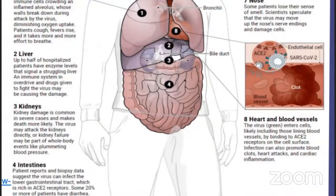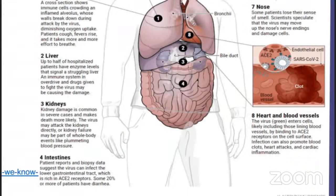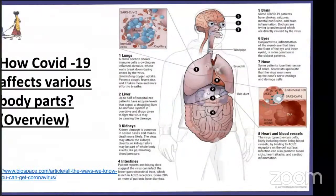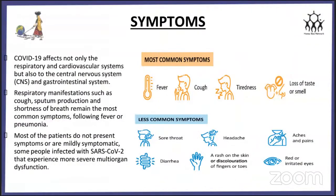Heart and blood vessels: the virus enters the cell — including those lining blood vessels — by binding to the ACE2 receptor on the cell surface. Infection can also promote blood clots, heart attacks, and cardiac inflammation. Now the symptoms will be described by Ambika.